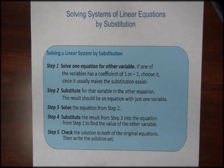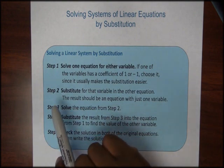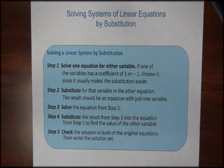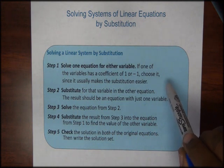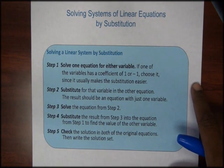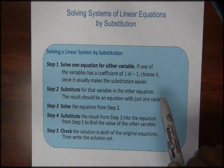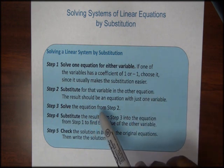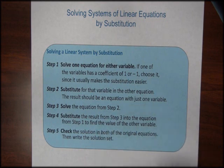We'll solve systems of linear equations by using a substitution method. Here are the five steps. The first step is to solve one equation for one of its variables. If one of the variables has a coefficient of one or negative one, you want to choose that variable because it usually makes the substitution easier. The second step is to substitute for that variable in the other equation.